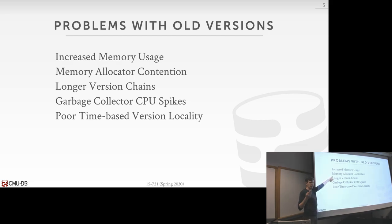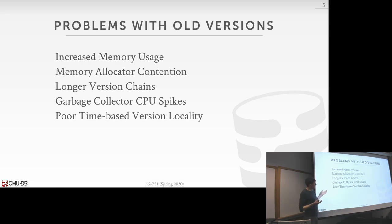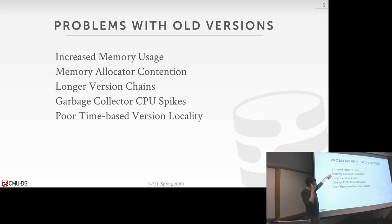Version chains are going to get longer, meaning transactions that have to traverse the chain to find the right version will take even longer. If you're doing newest-to-oldest and most OLTP transactions touch the newest version, this isn't a big deal. But for analytical queries that need to traverse the whole chain, it takes longer. The only system I know that does oldest-to-newest is Hekaton, so they would have an insertion problem at the end.